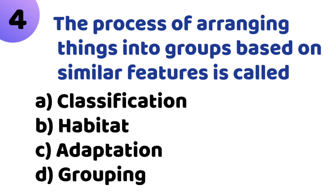Fourth question: The process of arranging things into groups based on similar features is called — Option A: Classification. Option B: Habitat. Option C: Adaptation. Option D: Grouping. The correct answer is Option D, Grouping.